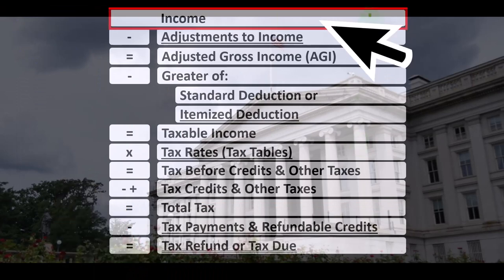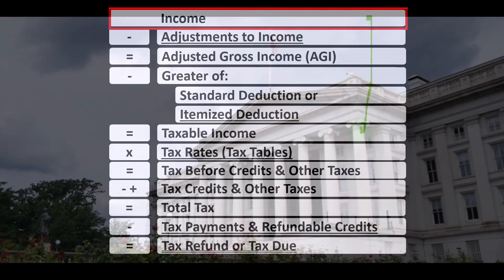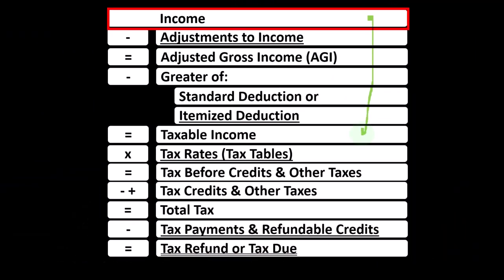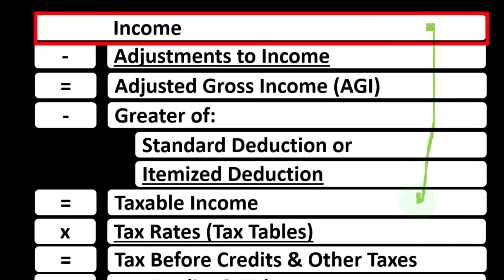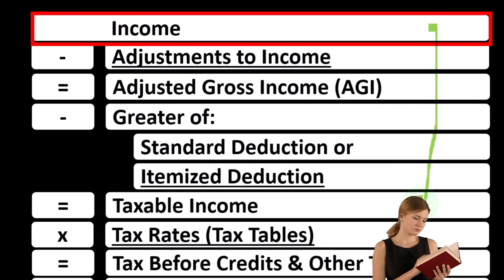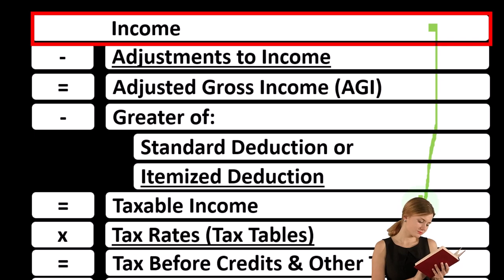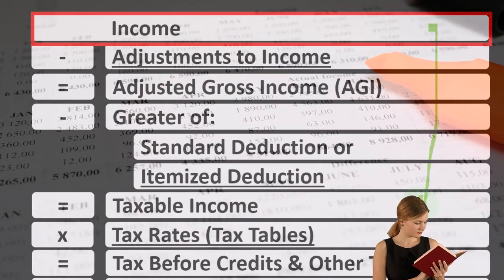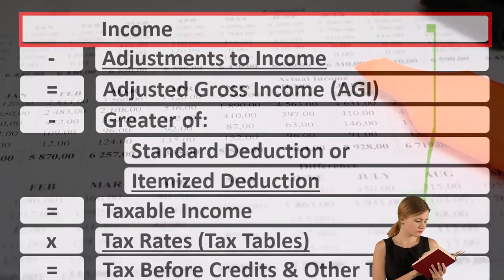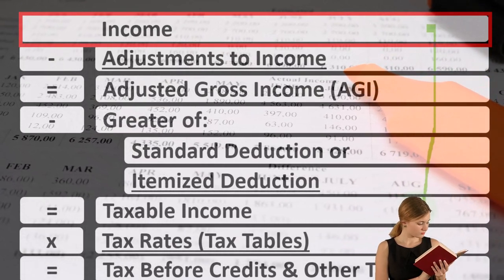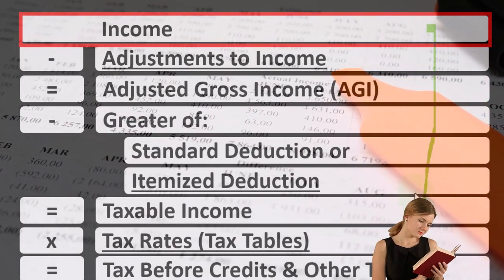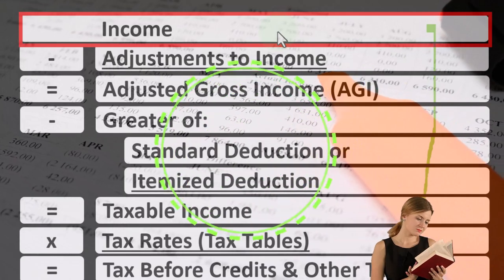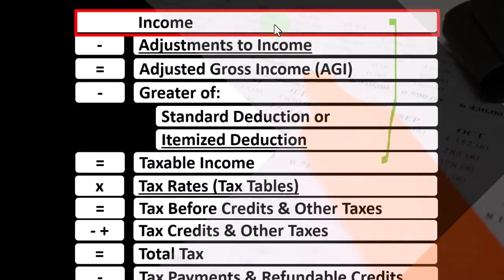The first half of the Income Tax Formula is, in essence, an Income Statement, but just an outline — scaffolding with other forms and schedules flowing into these line items. One of those is the Schedule C, which is, in essence, an Income Statement in and of itself. Income minus expenses gives us the net income that flows from Schedule C into Line 1 of Income on the Income Tax Formula, Page 1 of the Form 1040.